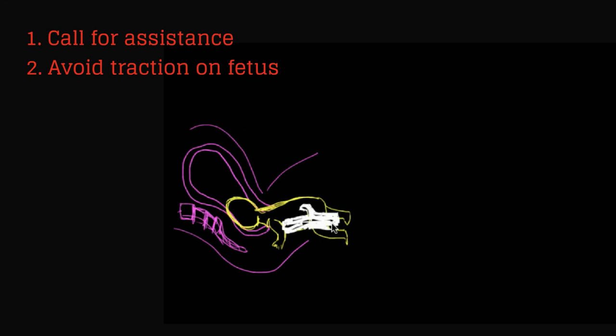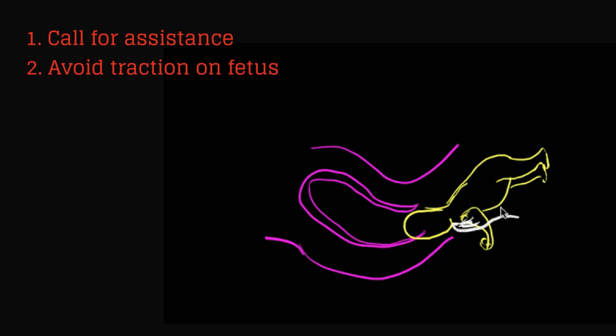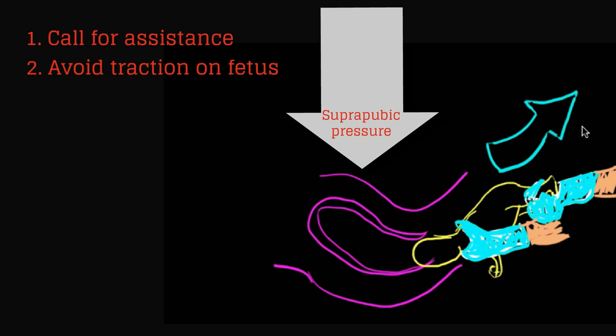If this situation were to arise the first thing is to call for assistance. Next it's important to avoid any traction on the fetus for the goal is to avoid a fetal head extension which can make the delivery more difficult. Wait until the maternal efforts have resulted in the fetus being delivered to the level of the umbilicus. Suprapubic pressure can then be applied to promote flexion and descent of the fetal head.